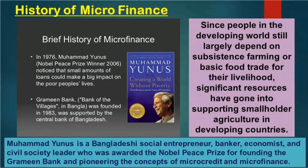Muhammad Yunus is a Bangladeshi social entrepreneur, banker, economist, and civil society leader who was awarded the Nobel Prize for founding the Grameen Bank and pioneering the concepts of microcredit and microfinance. Not only microcredit and microfinance — microinsurance is also available right now.